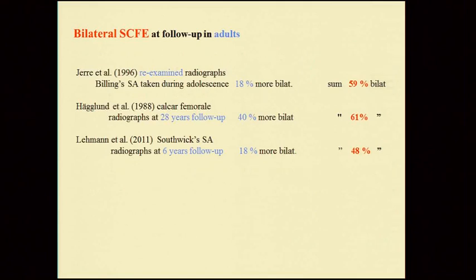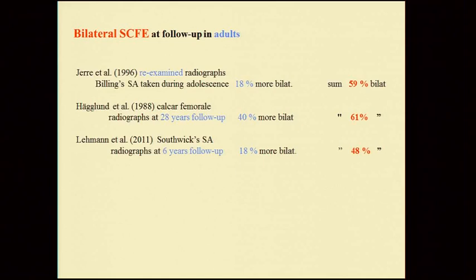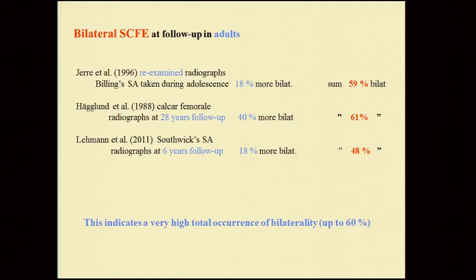There are also studies on bilateral slipping in adults. Gerry from Gothenburg re-examined radiographs taken during adolescence using Billing's method and found 18 percent more bilateral cases, ending up with 59 percent bilateral. Hegglund from Malmö used a radiographic method based on calcar with 28 years follow-up and found signs of bilateral slip in 40 percent more patients, ending up with 61 percent. Lehmann from Bergen found 18 percent more bilateral at six-year follow-up in young adults, ending up with 48 percent — meaning a very high total occurrence of bilaterality, up to 60 percent.